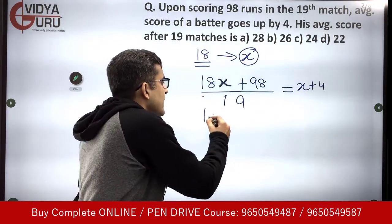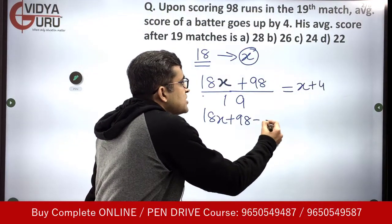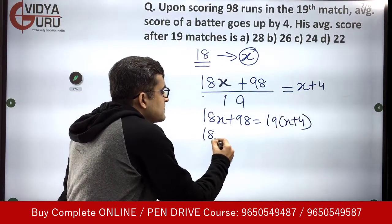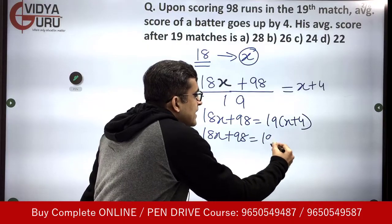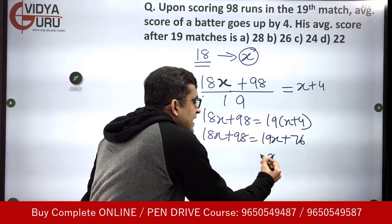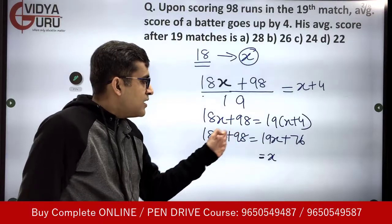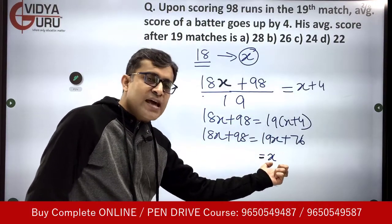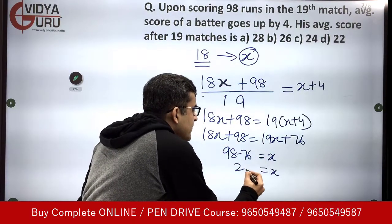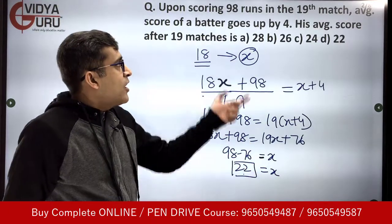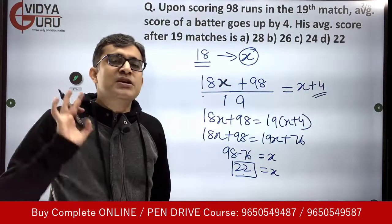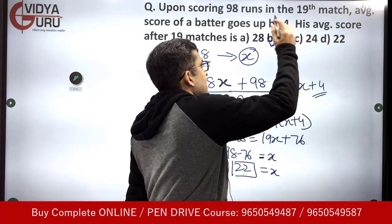It's now a linear equation: 18x + 98 = 19(x + 4), which gives 18x + 98 = 19x + 76. So x = 98 − 76 = 22. That was the average earlier. Now after 19 matches the average has increased by 4, so 22 + 4 = 26. The answer is 26. But that's not how you should solve the question — in the exam you don't have time for this approach.